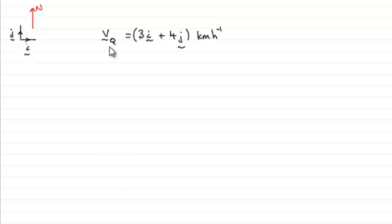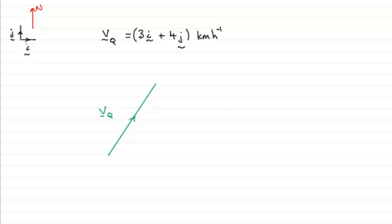To do something like this I'd want to illustrate this vector first of all. So the vector vq is essentially three units to the right and four units up — three units that way, four units that way.